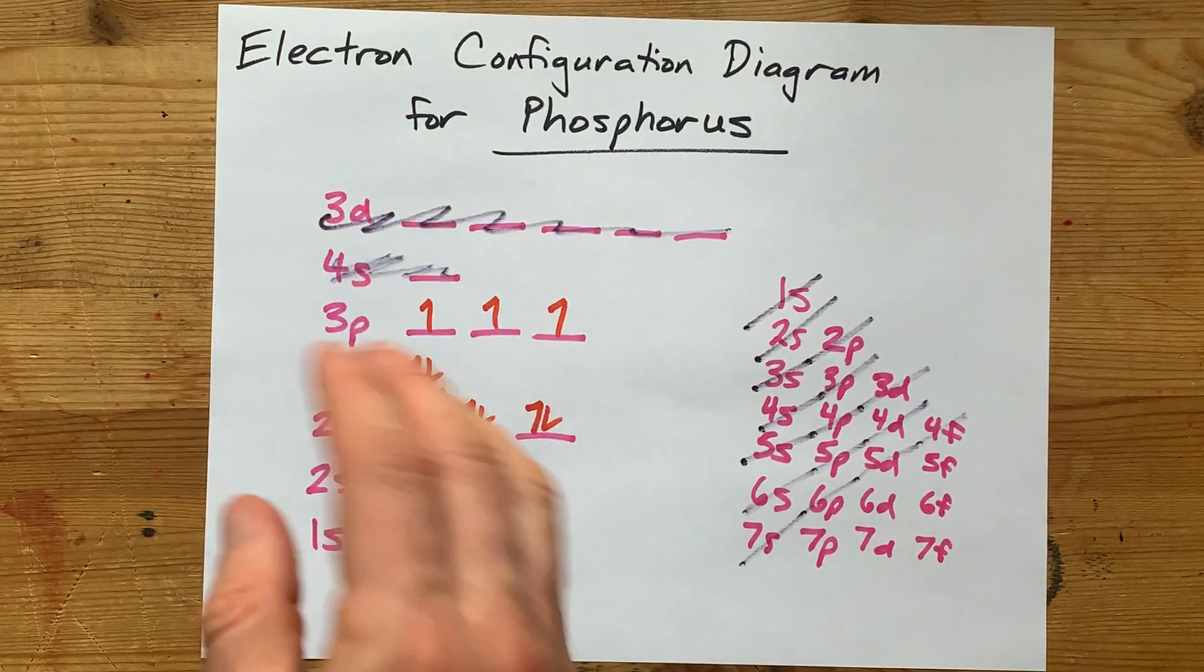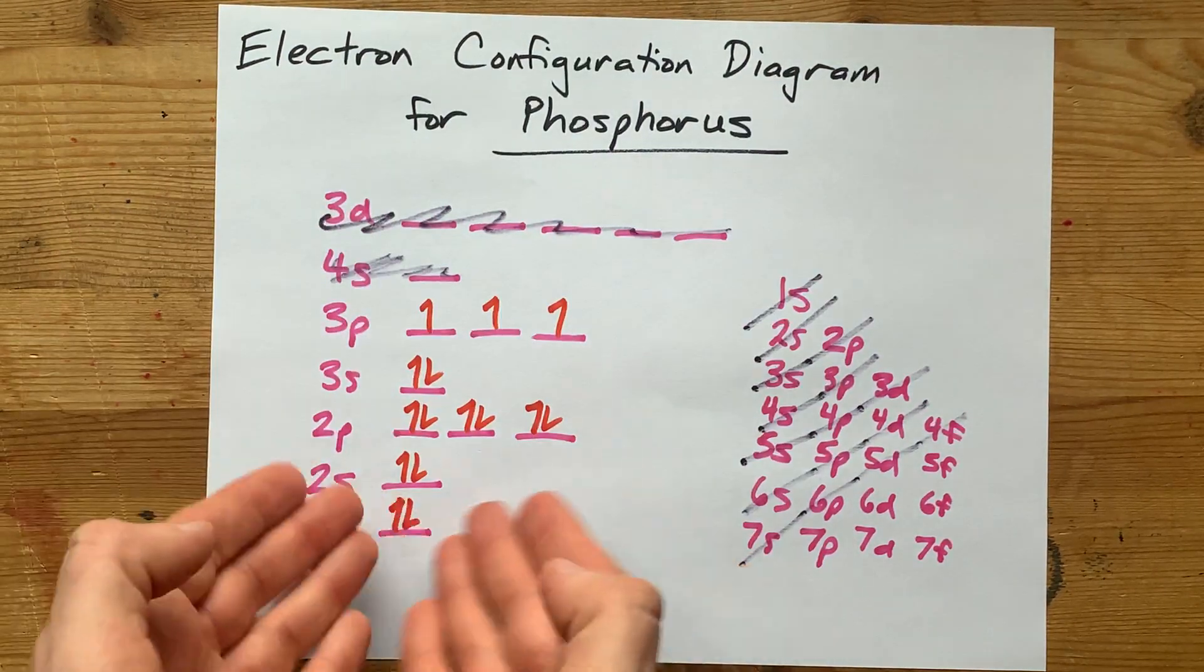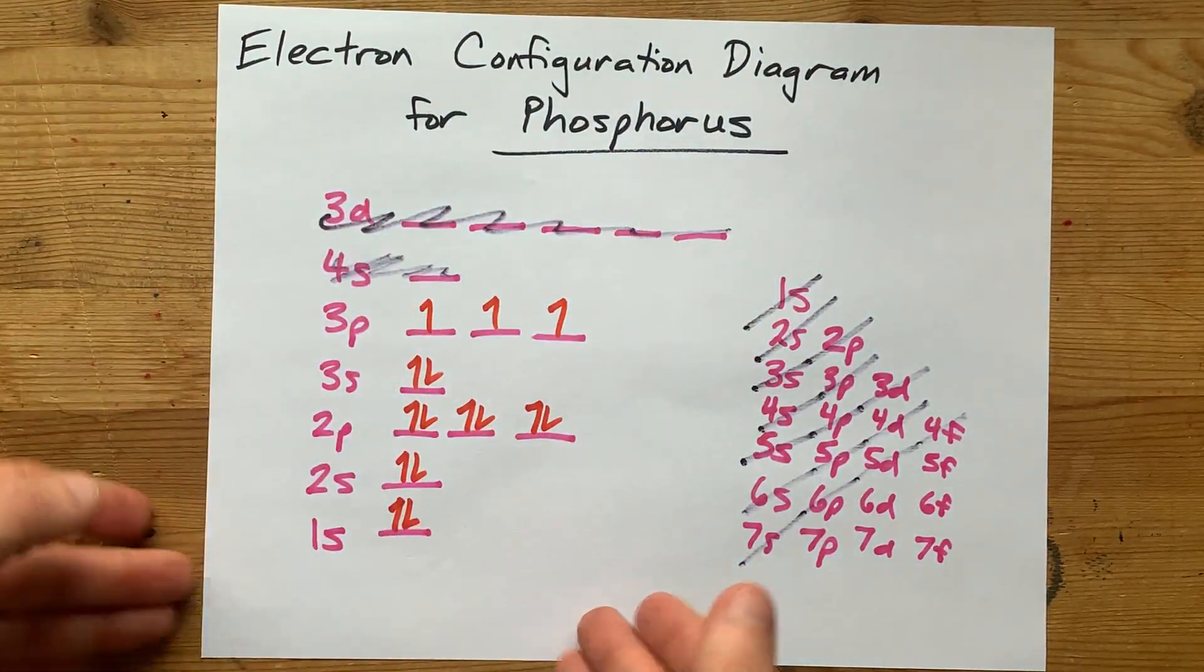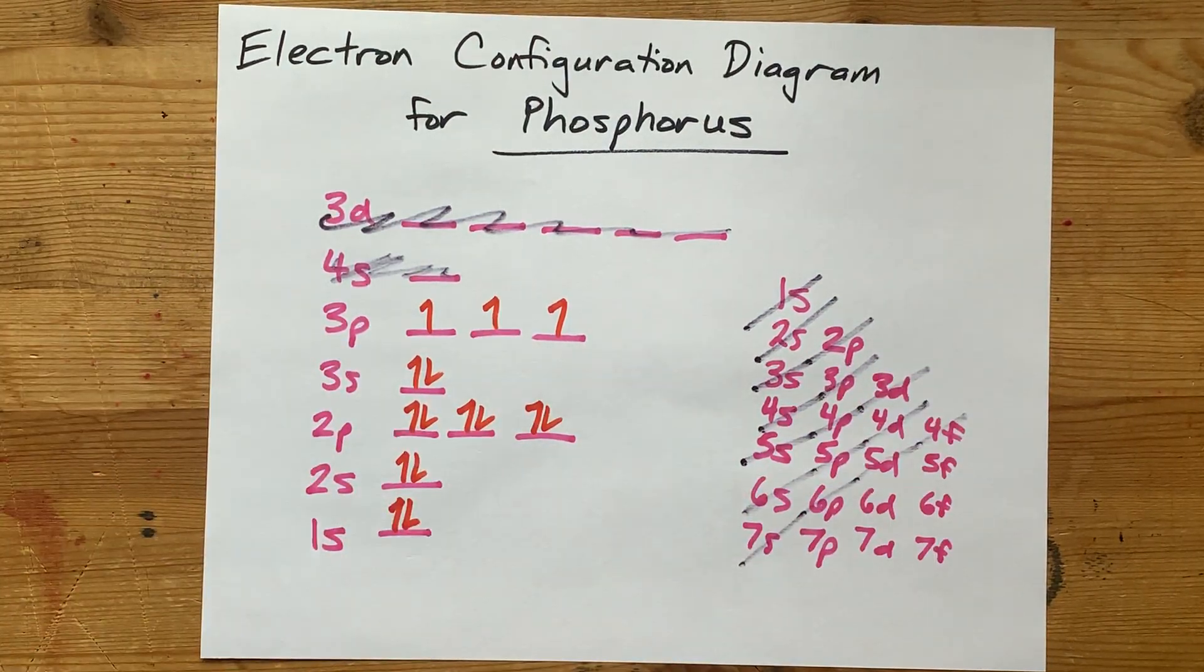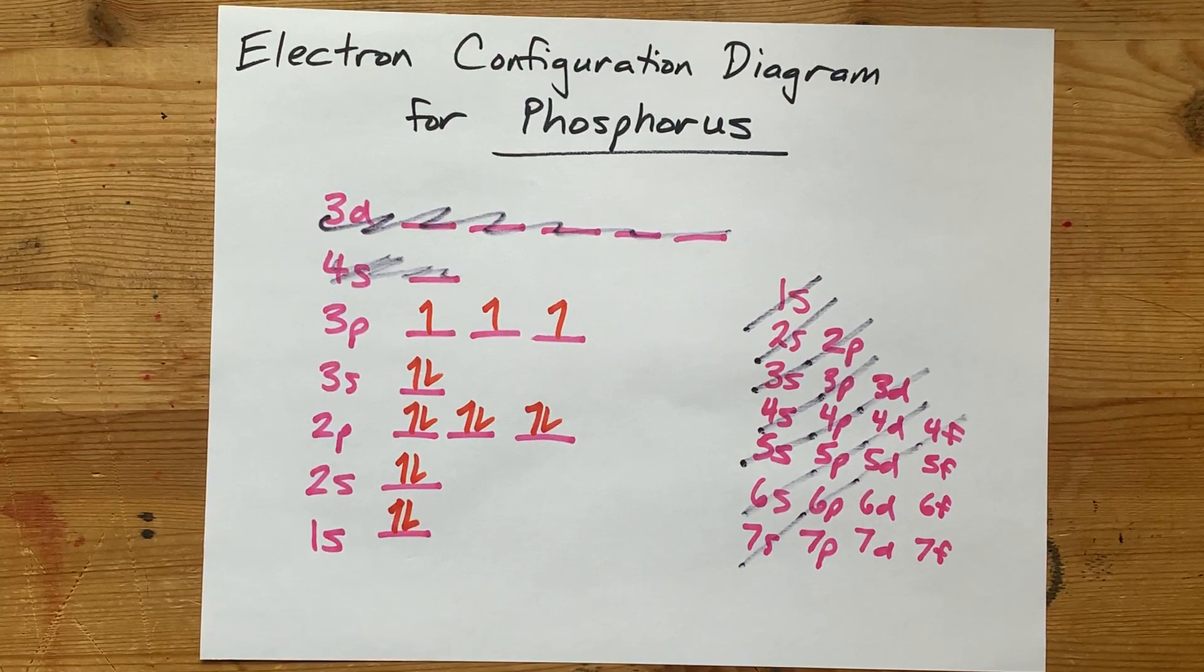Anyways, you came for the electron configuration diagram for phosphorus. It's always the same starting diagram. Then you just fill it up with however many electrons you need. Great? Great. Thanks for being with me. Best of luck.